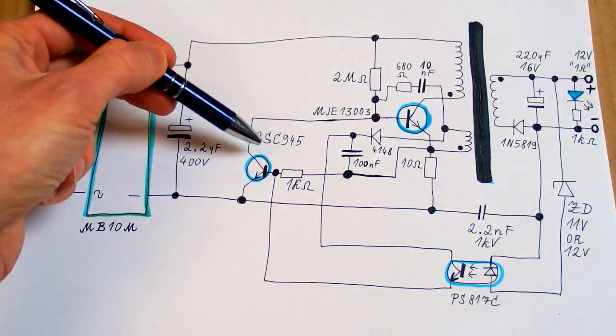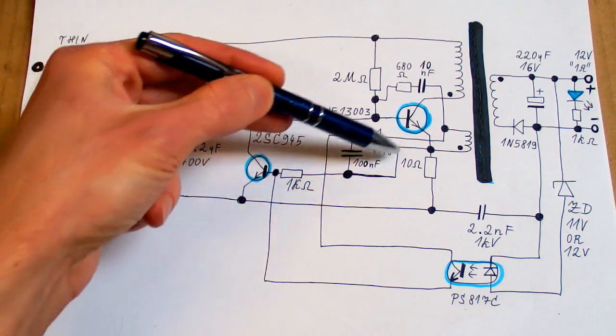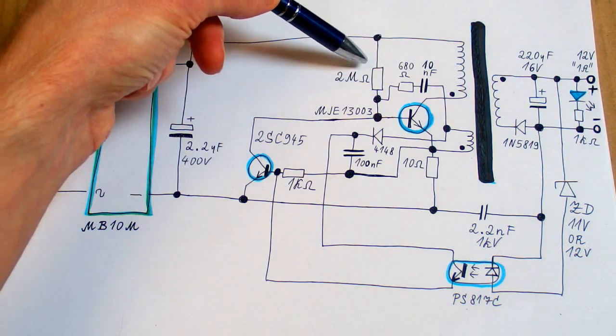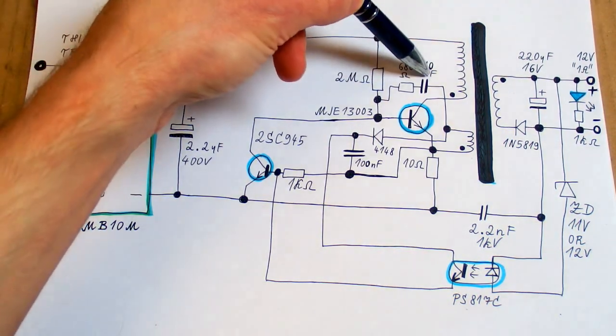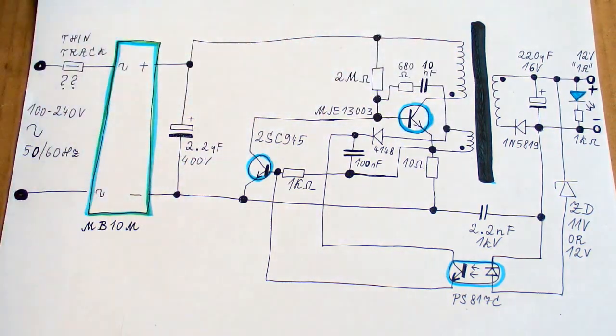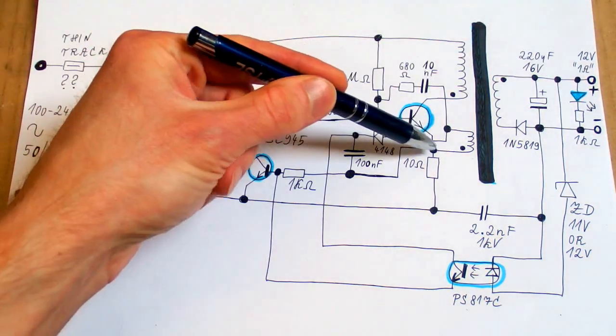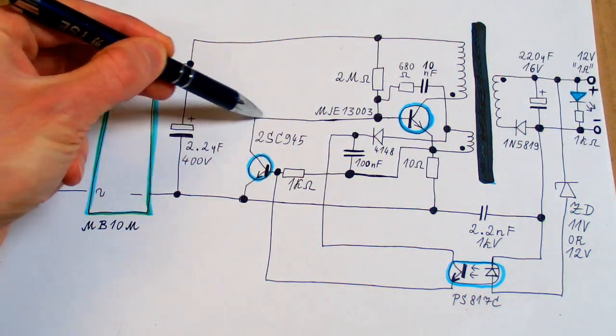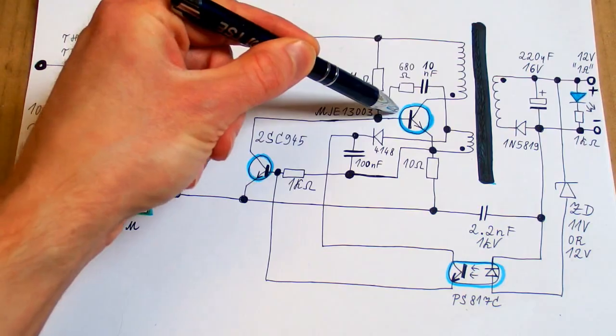Here's the auxiliary transistor, which senses the current on this current sensing shunt. This resistor is to start it up and those are to make it oscillate using a positive feedback into the base. When the current is too high, the voltage drop of this resistor is enough to turn this transistor on. It will pull down the base of this one and turn it off.